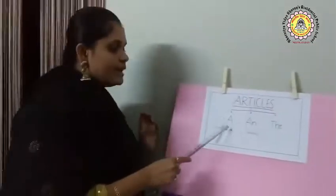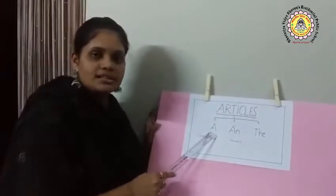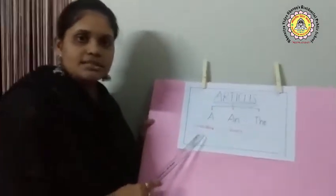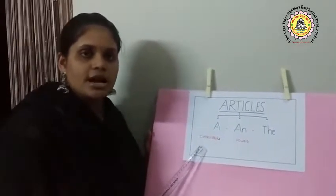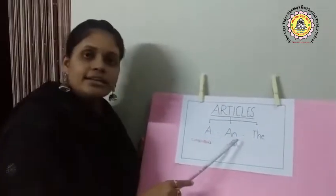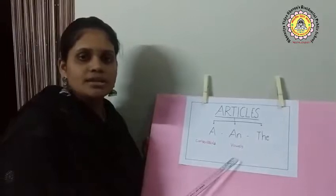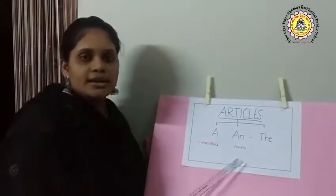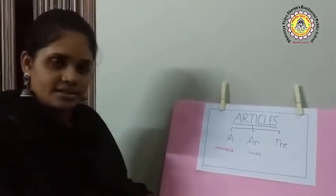Coming to A and AN: A is used before nouns that start with consonants — that means in front of nouns starting with consonants, we write A. And coming to AN, it is used before nouns that start with vowel letters. Based on that, here I have given you some exercises. Let us discuss them.